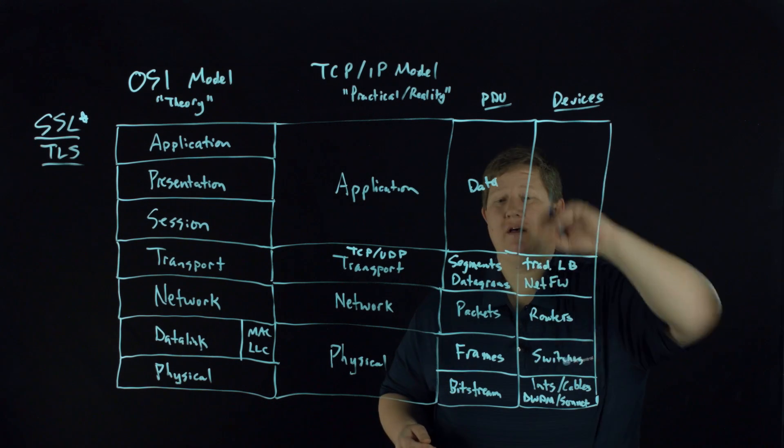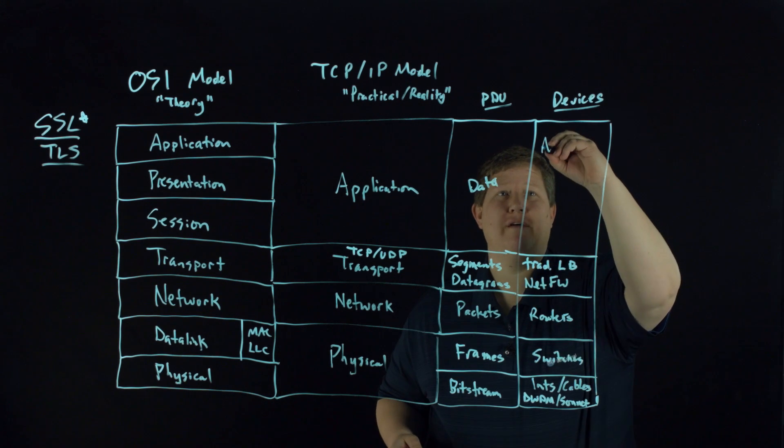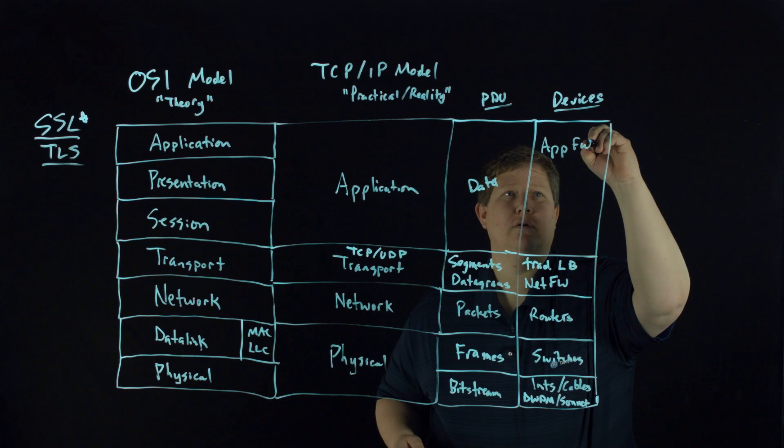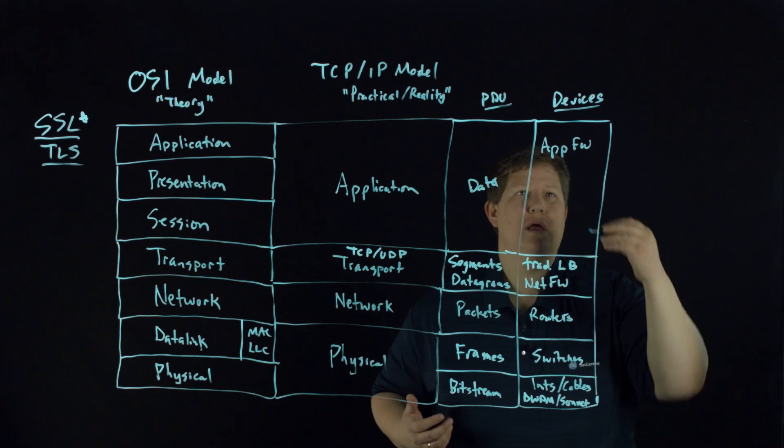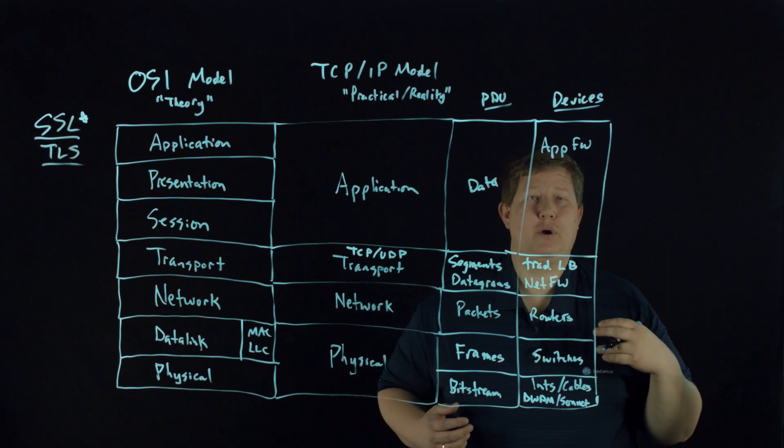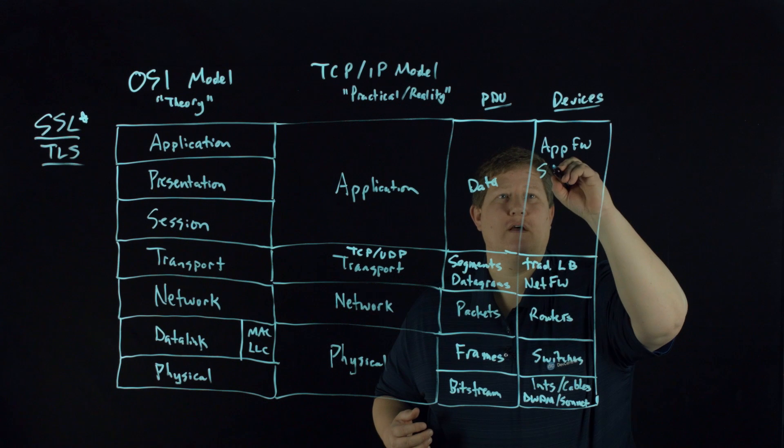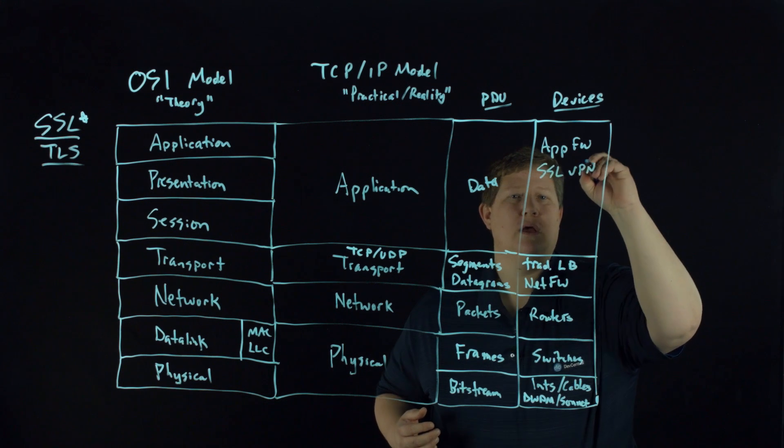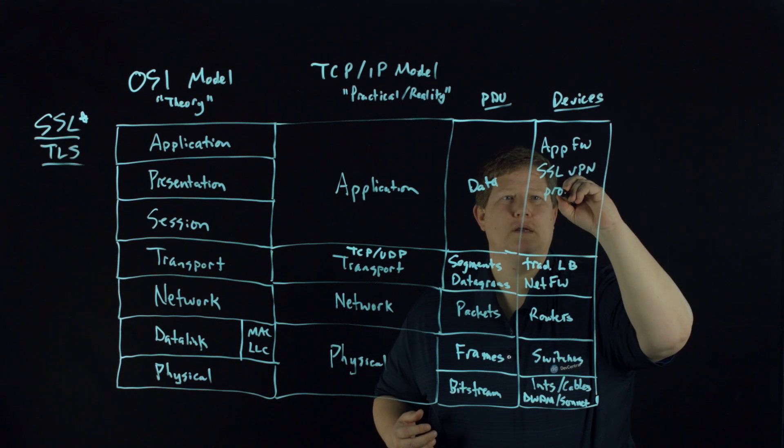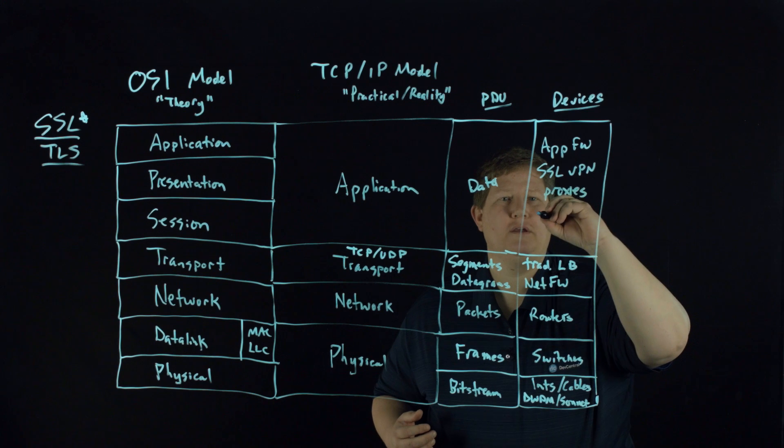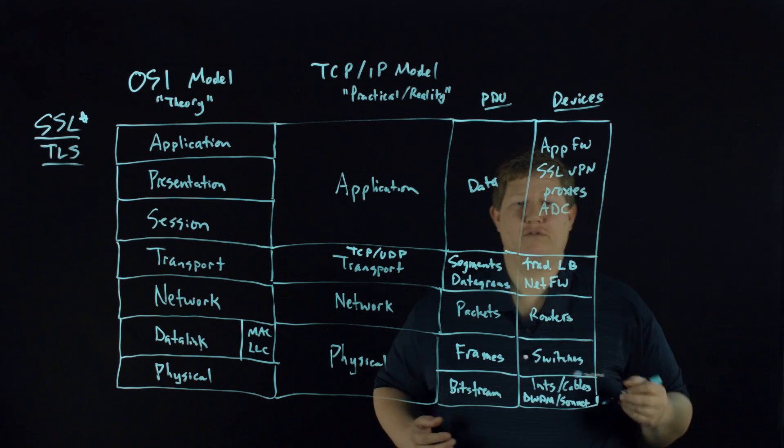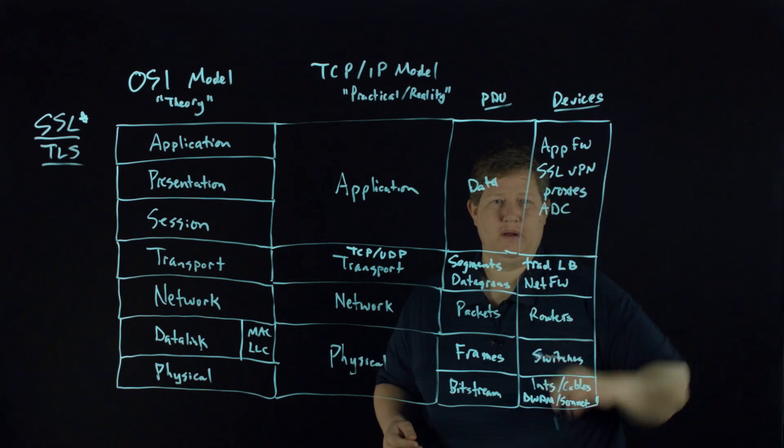And then up above layer four, this is where you have your app firewalls, whether it's a web app firewall or other protocols. Your SSL VPNs, your proxies, and your application delivery controllers, all of that stuff sits up here above layer four.